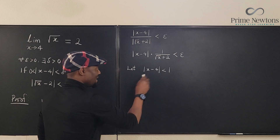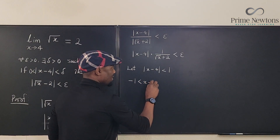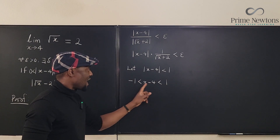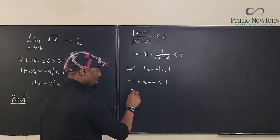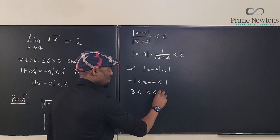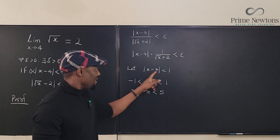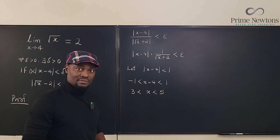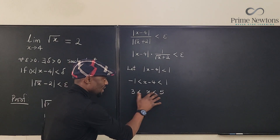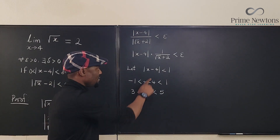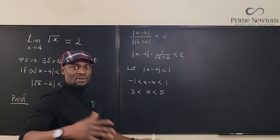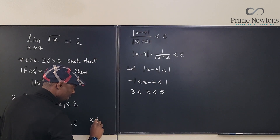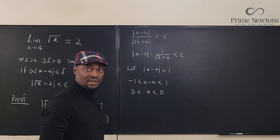We want to make this distance as small as possible — that's why we make this choice. We can write this as minus 1 is less than x minus 4, which is less than 1. If we add 4 to each section, we get 3 is less than x, which is less than 5. So the values of x that make this assumption work will be from 3 to 5. Also, x is not equal to 4, because making x equal 4 would make everything trivial.